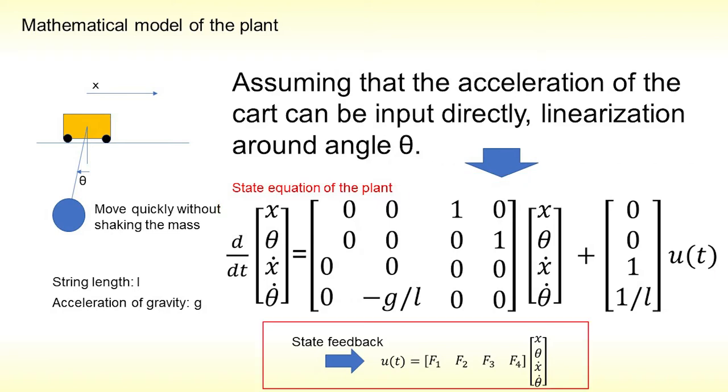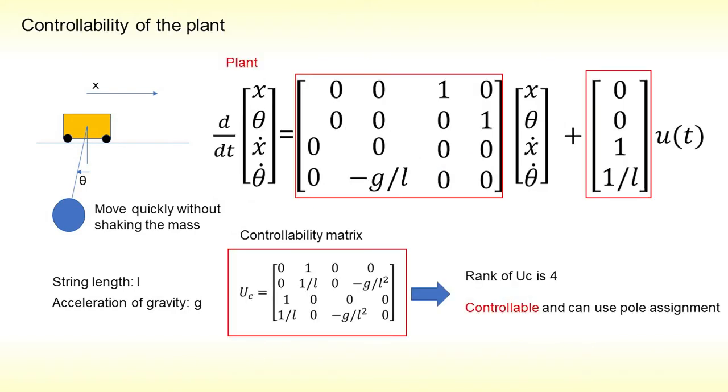State feedback for the state equation is considered in this video. Controllability matrix is given like this. The rank of Uc is 4. This system is controllable and we can use pole assignment.